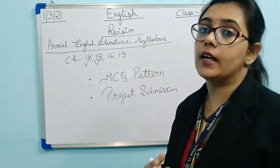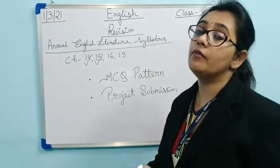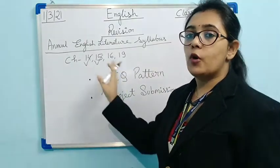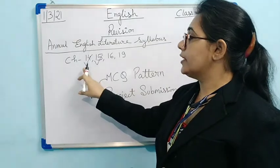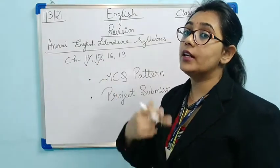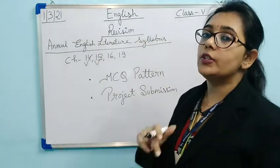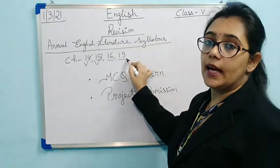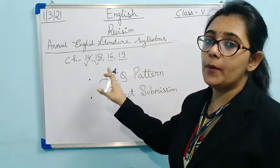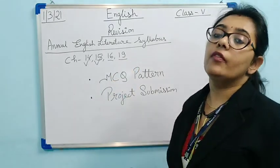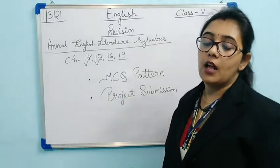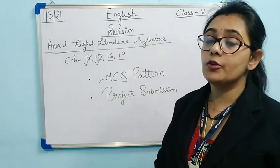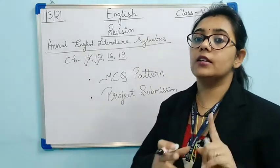I hope you all have revised those word meanings and learnt them. That means word meanings of all chapters are revised, and chapters 14 and 15 were revised in our last class. In today's class, we are going to revise lessons 16 and 19. Lesson 16 is 'I Float My Paper Boats' and chapter 19 is 'The Emperor and the Nightingale'. I hope both the poem and the lesson are clear to you and you have read them thoroughly.